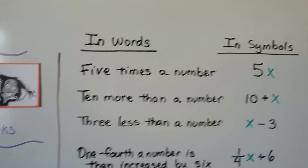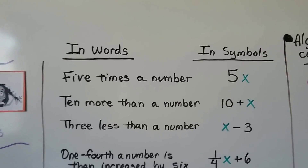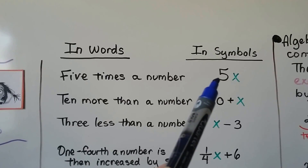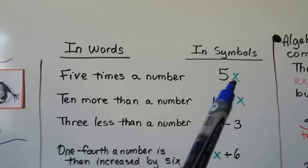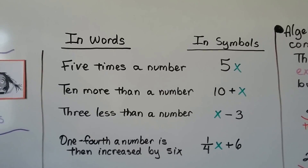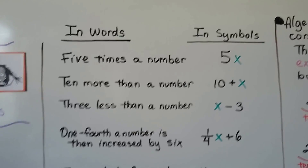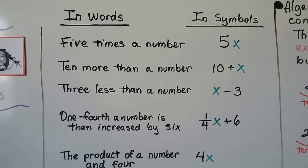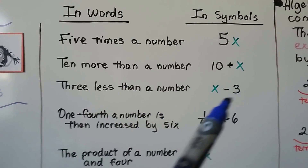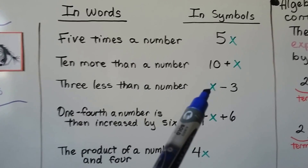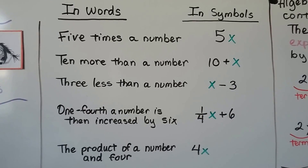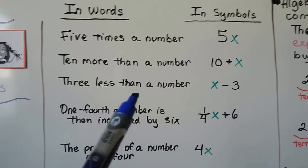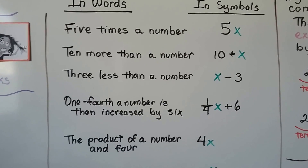You can even put numbers next to each other. In this example, we have 5 times a number — in symbols, it would be 5x. That 5, the number in front of the variable, is called a coefficient. 10 more than a number would be x plus 10. 3 less than a number would be x minus 3. If you have to read it a couple times to figure out what they're talking about, that's no big deal — we all have to do that every once in a while.